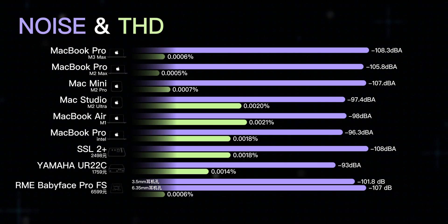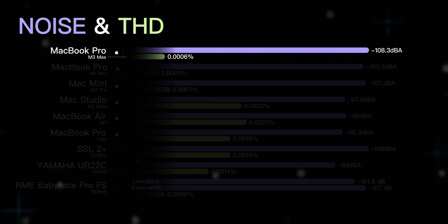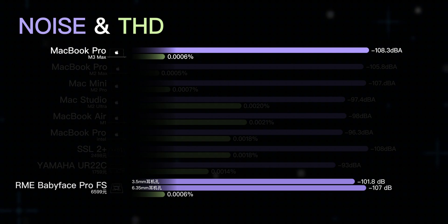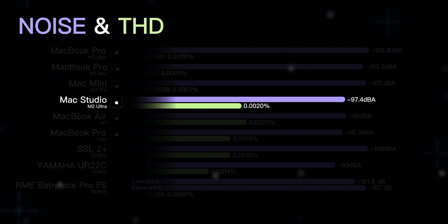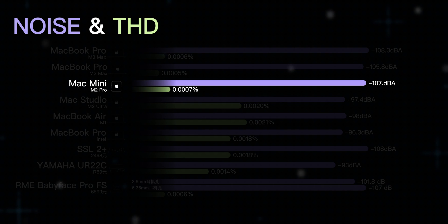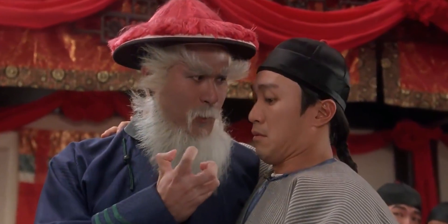Moving on to noise floor and THD — the lower the number, the cleaner the sound. The M3 Max MacBook Pro has a noise floor of 108.3 dB and a THD of 0.0006%, which is better than the $659 RME Babyface Pro FS. Poor performance here is still the Mac Studio with M2 Ultra core — maybe Apple figures that if you buy a Studio, you can afford an external sound card. On the contrary, the Mac Mini with M2 Pro core performs really well.